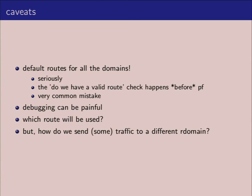In OpenBSD, when a packet arrives from the network, we do a check: do we have any valid route for this packet? We do that check extremely early on, even before PF inspects the packet. If we don't have a route, we drop the packet for performance reasons.